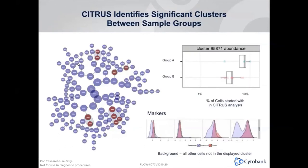Here is what a Citrus tree looks like. The Citrus tree starts with a central cluster containing all events from all samples, then branches out with child and grandchild clusters, where each parent cluster contains the events of its children. There are arrows between clusters pointing from parent to child. If connected clusters are identified as significant — as highlighted here — you can pick the parent cluster since it contains all child clusters, unless you want to identify subsets in more detail. In this case, a cluster was identified as showing differences in abundance between the two groups, and you can then check the marker expression on this particular cluster to identify the phenotype.